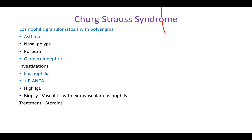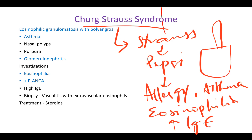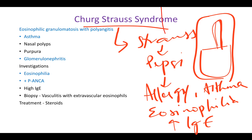Let's start with Churg-Strauss syndrome. Think of 'Straws' as a person — his name is Straws. He is having some Pepsi using some straws, as you can see in this image. This is a tin or a can with some straws. So this guy Straws is having some Pepsi using these straws.